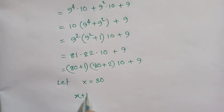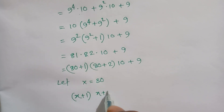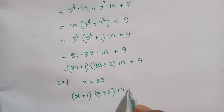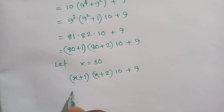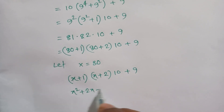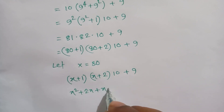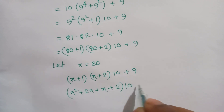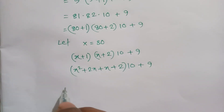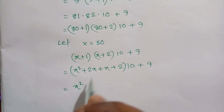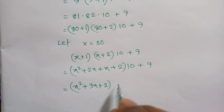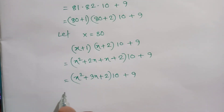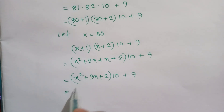Multiplying out (x + 1)(x + 2) gives x squared plus 2x plus x plus 2, which equals x squared plus 3x plus 2. So the expression is (x squared + 3x + 2) times 10 plus 9, where x equals 80.